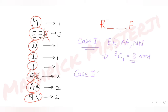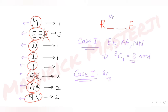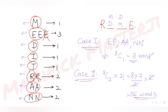Case 2: I select two different letters for the middle positions. The available distinct letters are M, E, D, I, T, R, A, N — that's 8 options. I choose any 2 of them: 8C2 = 28 combinations. Since the two letters can be arranged in 2 positions in 2! = 2 ways, that gives 28 × 2 = 56 words.